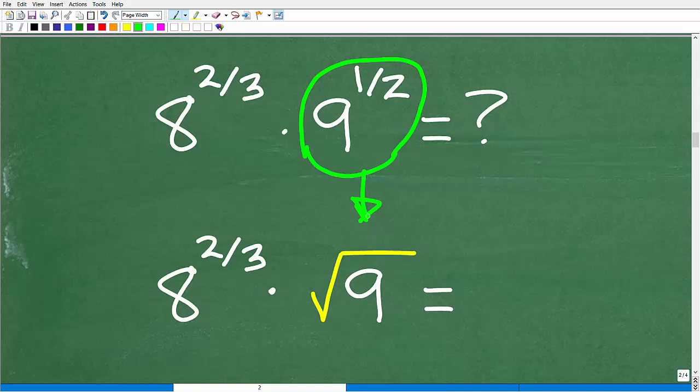You want to be thinking about going from rational exponents to radicals and radicals to rational exponents. So we know that the square root of 9 is 3. This part of the problem is not too difficult, but this part of the problem will be a little bit more interesting.